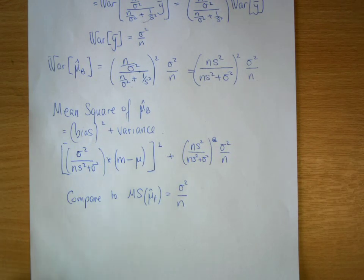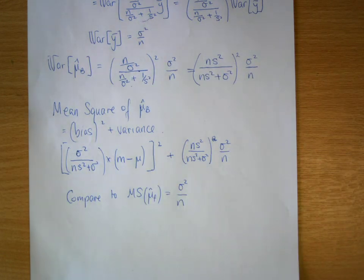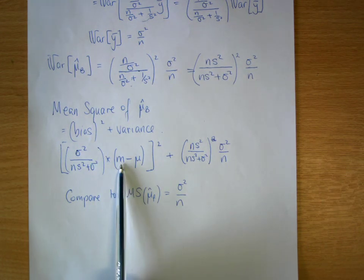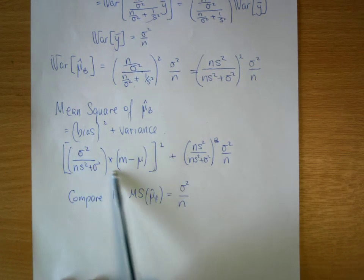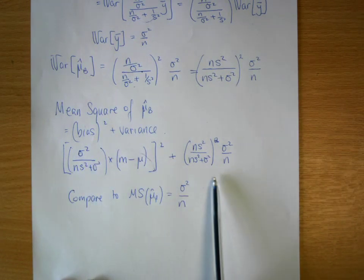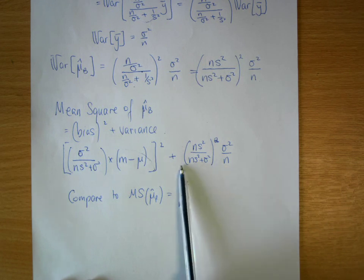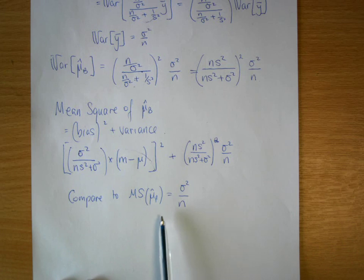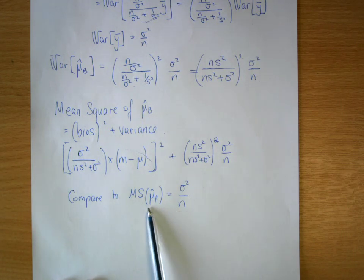In practice, we would plot the two MSEs for different values of the true mean. We'll notice that the better our prior is at estimating the actual true value, the smaller the bias becomes. Also, this scaling factor is less than one, so the variance part of the Bayesian estimator's MSE is strictly less than or equal to the variance of the frequentist estimator.